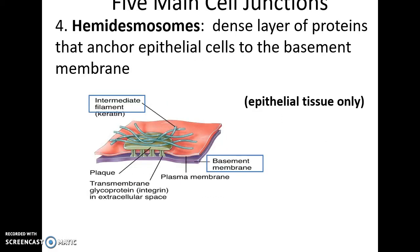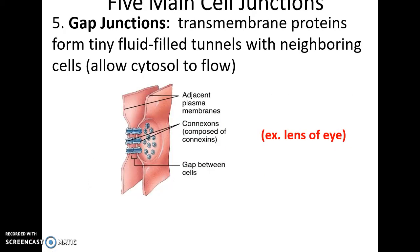Hemidesmosomes are similar in structure to desmosomes, except instead of attaching to a neighboring cell, they attach to a protein and carbohydrate complex called the basement membrane. This is only found in epithelial tissue. Gap junctions have two cells come together and form tunnels between them, allowing fluids and other materials in their cytosol to flow between the cells.